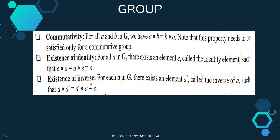The fourth property is existence of inverse. For every element a in the group, there exists an element a' called the inverse of a, such that a operation a' = a' operation a = e, where e is the identity element.